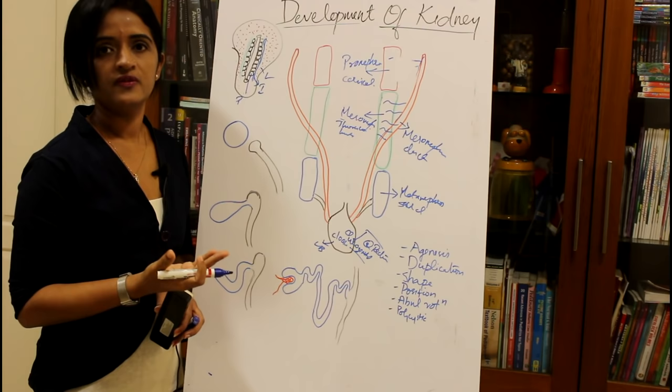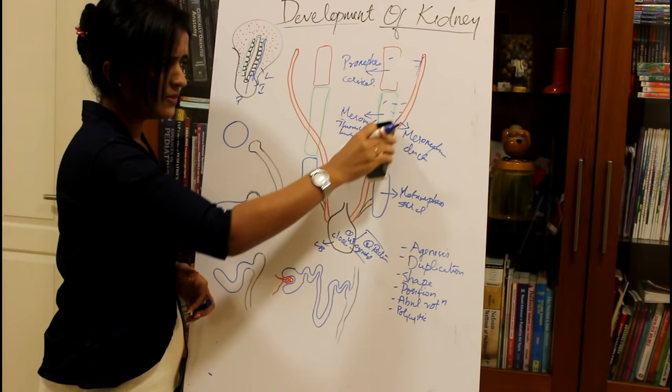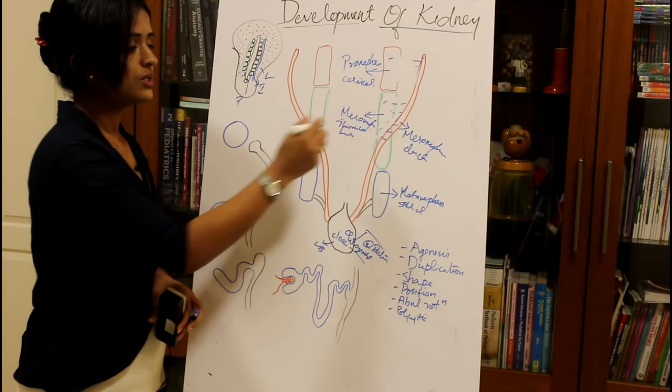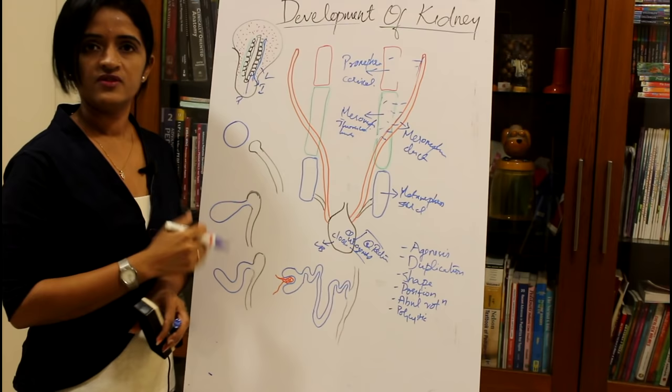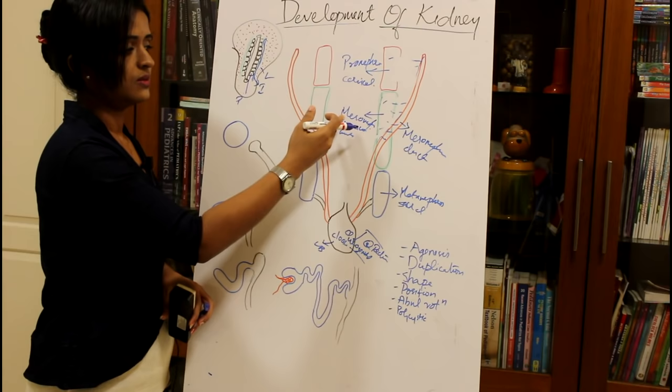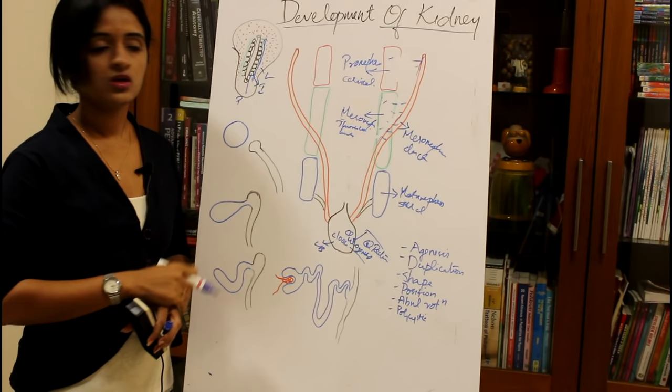Towards the final stages of kidney development, the mesonephric ductules and the mesonephric duct disappear, especially in females. In males, they persist to form the ductal system of the testis. The mesonephric duct is also called the Wolffian duct.